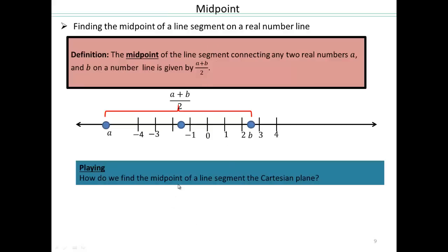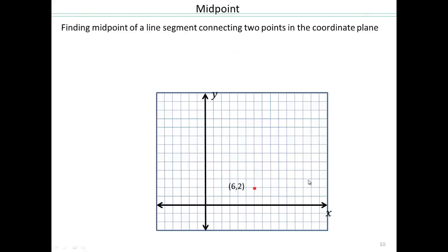So of course, now we want to know how can we find midpoint of a line segment in the Cartesian plane? So here we go. We have, let's say, example 6, 2 and 10, 12. Let's connect that line segment. I want exactly halfway between the point here somewhere. How do I find this point?